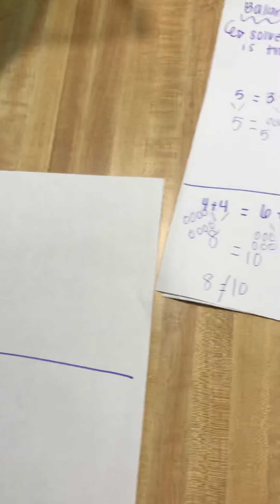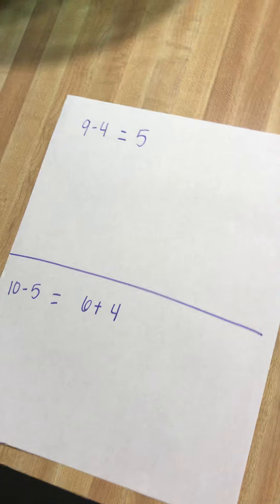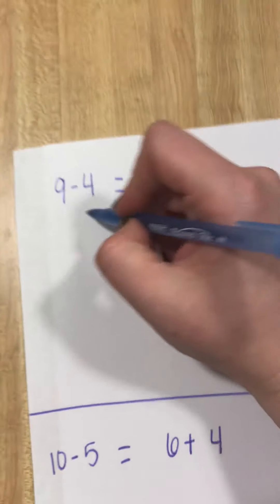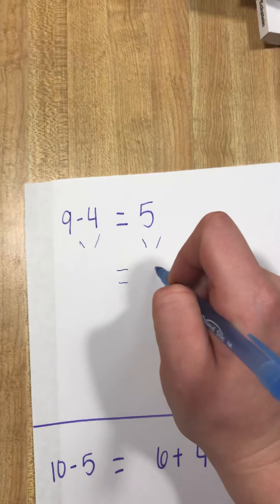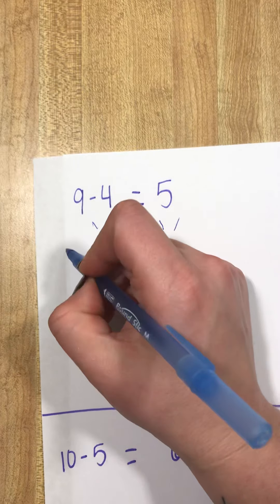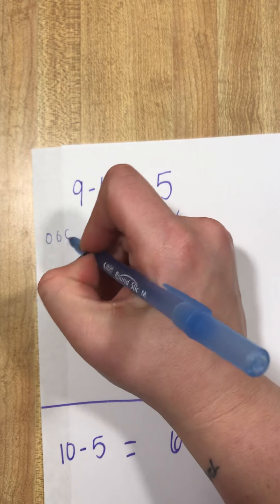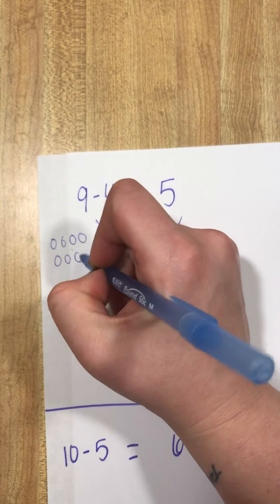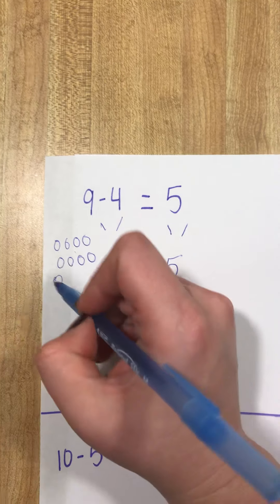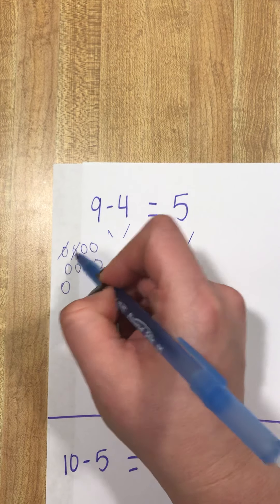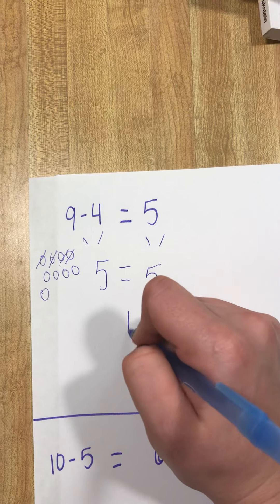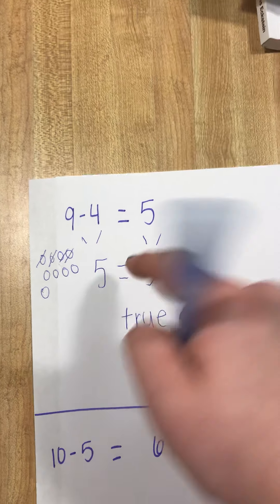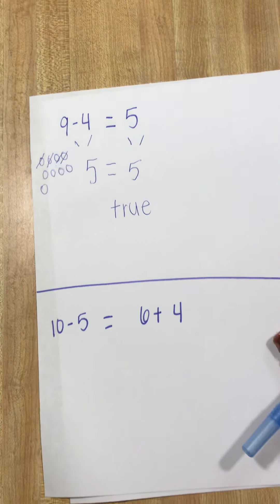Here are a couple examples of subtraction and mixed operations. So same thing. Set it up. It's already solved on this side. I'm going to put my five there. Nine minus four. I'm going to cross out four. One, two, three, four. I find out I have five left. It's true. Five equals five. Leave my equal sign alone. Make sure my equal sign's there.